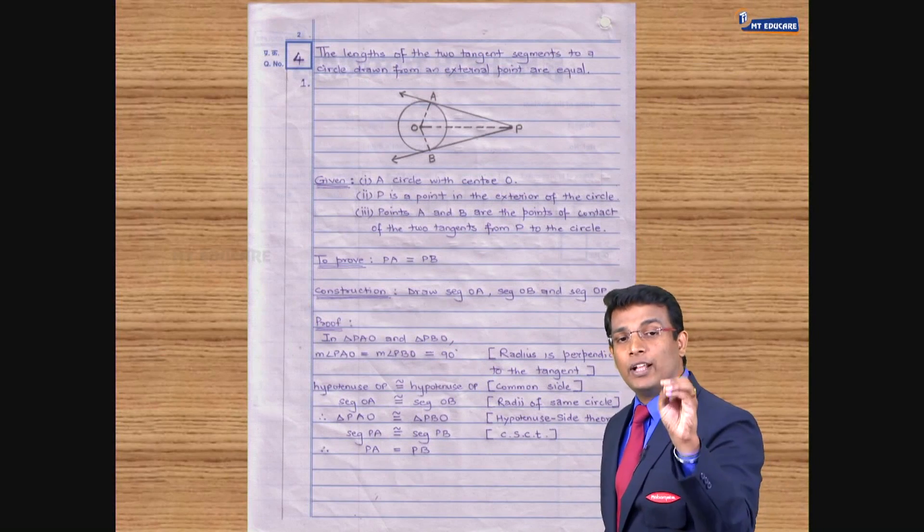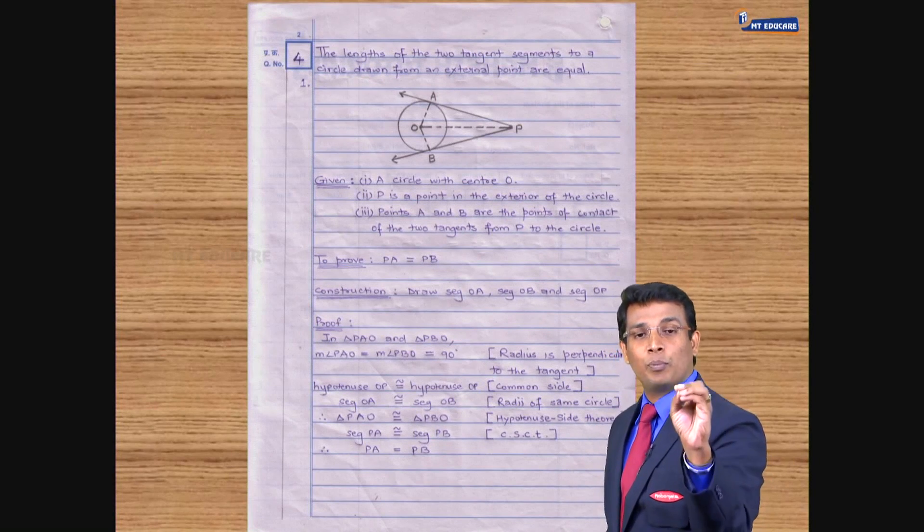This is nothing but the proof of a theorem. Length of the two tangent segments from an external point to a circle are equal.